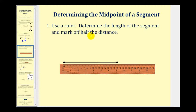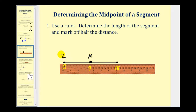Now let's take a look at some different ways to determine the midpoint of a segment. The first is with a ruler. Using a ruler, we can measure the length of a given segment, and then mark off half the distance. The length of the segment is eighteen centimeters — it starts at zero and stops at eighteen centimeters. Half of eighteen would be nine, so if we mark off nine centimeters, that would be the location of the midpoint. If this endpoint is point L and this endpoint is point O, we know that segment LM is congruent to segment MO, which means they're also equal in length. We put one tick mark on segment LM and one tick mark on segment MO to indicate they are equal in length.